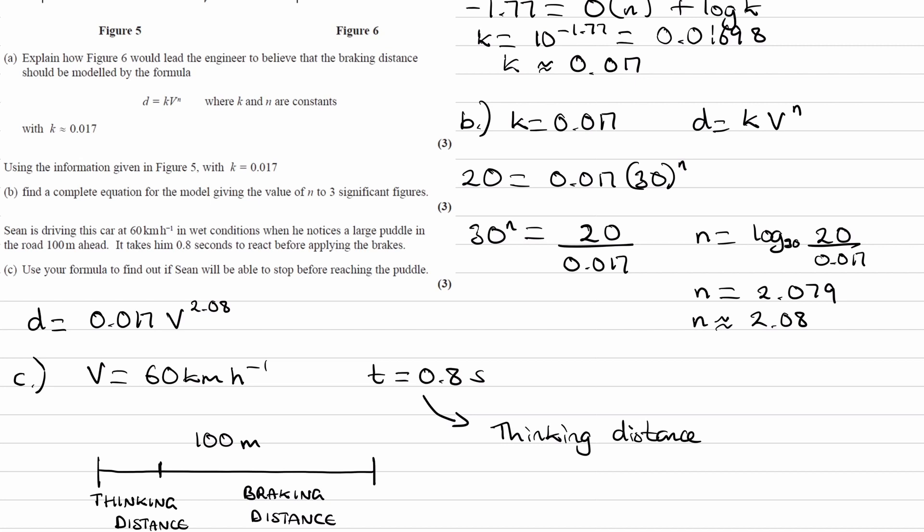And the two things added together will make the overall stopping distance. We're trying to see if the overall distance is less than 100 meters or not. So you want to think about how long does it take him to think, how far does he travel when he is thinking or reacting, and how far will he travel whilst he is actually braking, and see if the two things are less than 100 meters.